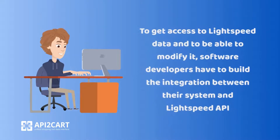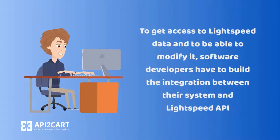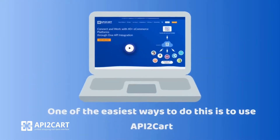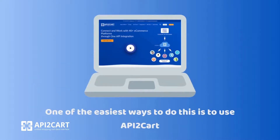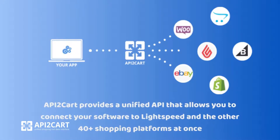To get access to Lightspeed data and to be able to modify it, software developers have to build the integration between their system and Lightspeed API. One of the easiest ways to do this is to use API2CART. API2CART provides a unified API that allows you to connect your software to Lightspeed and the other 40-plus shopping platforms at once.